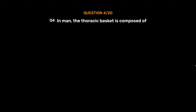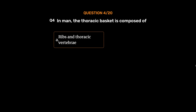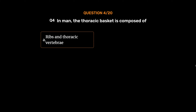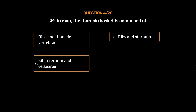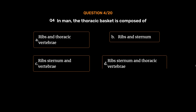Question No. 4. In man, the thoracic basket is composed of: Option A. Ribs and thoracic vertebrae, Option B. Ribs and sternum, Option C. Ribs, sternum and vertebrae, Option D. Ribs, sternum and thoracic vertebrae. The correct answer is Option D, Ribs, sternum and thoracic vertebrae.